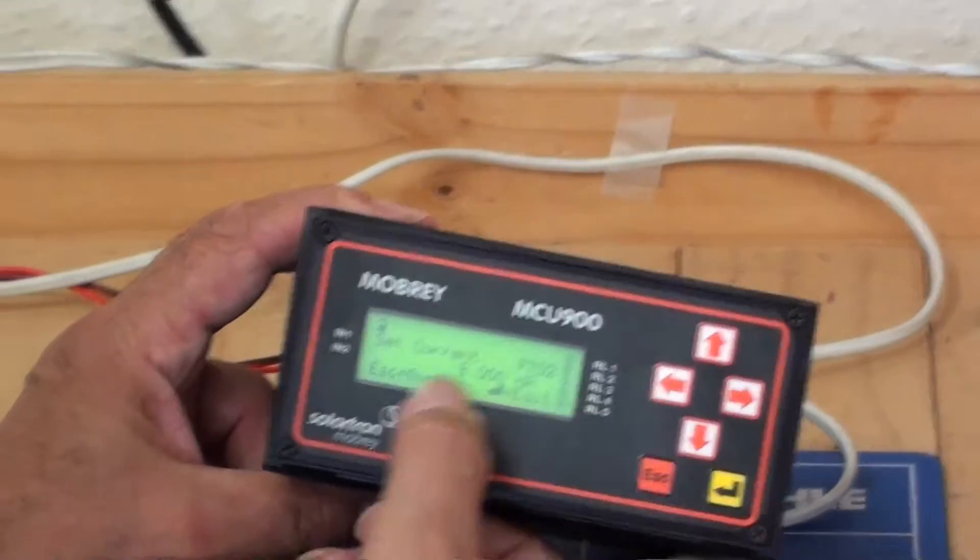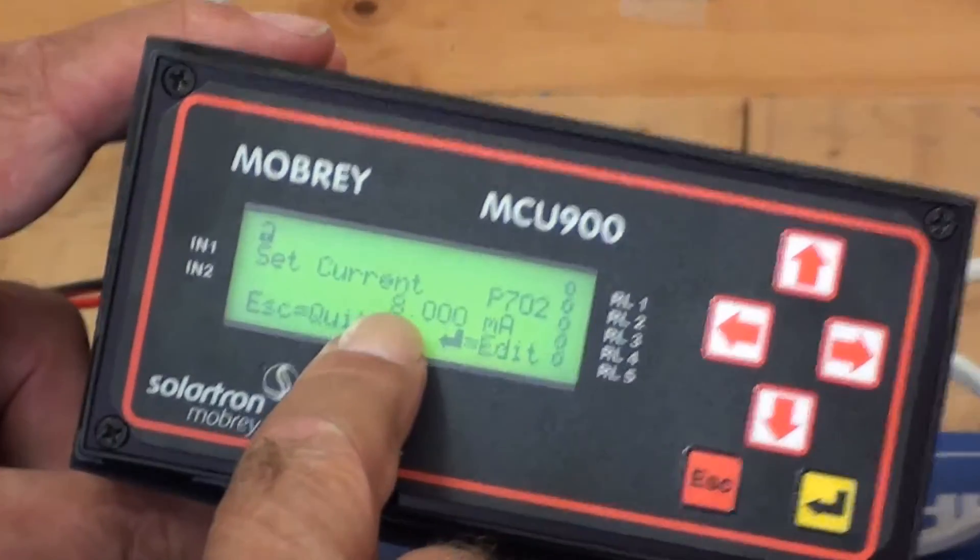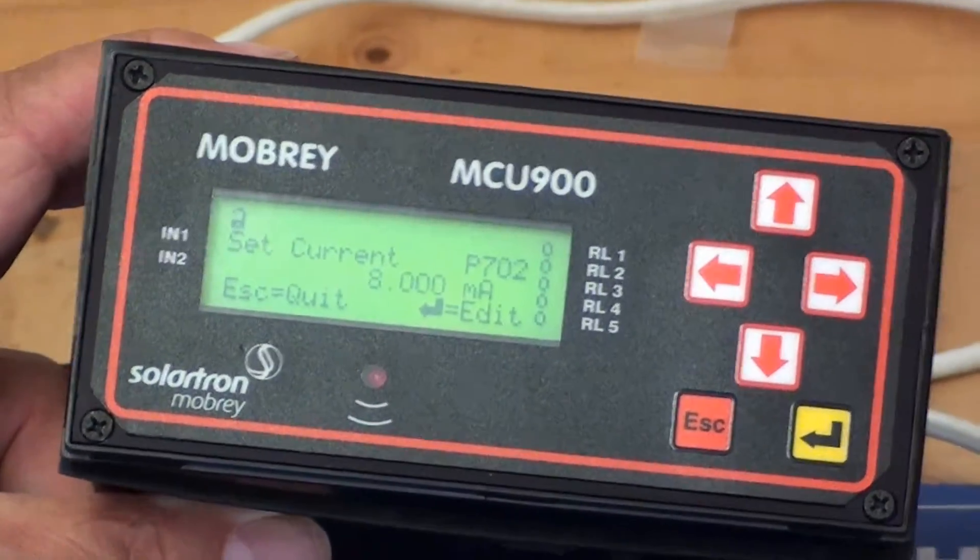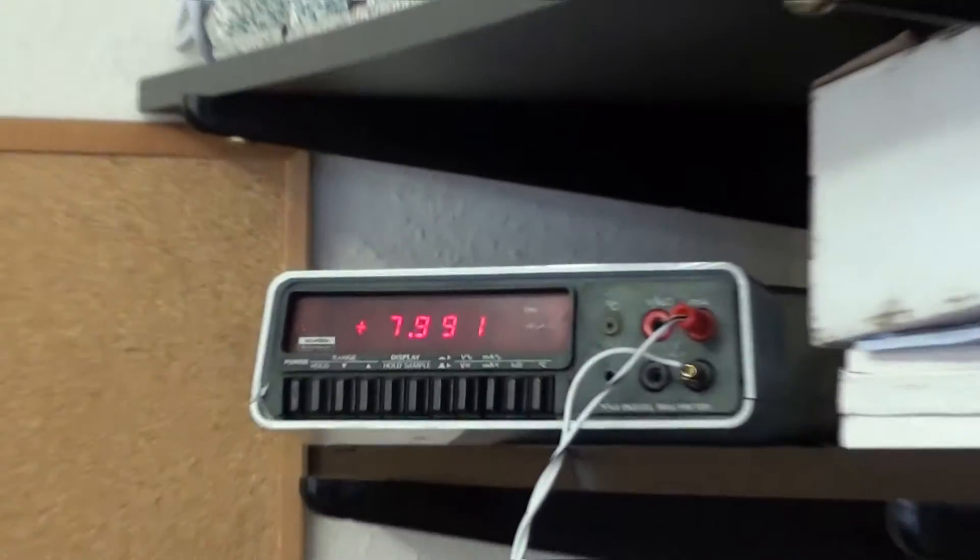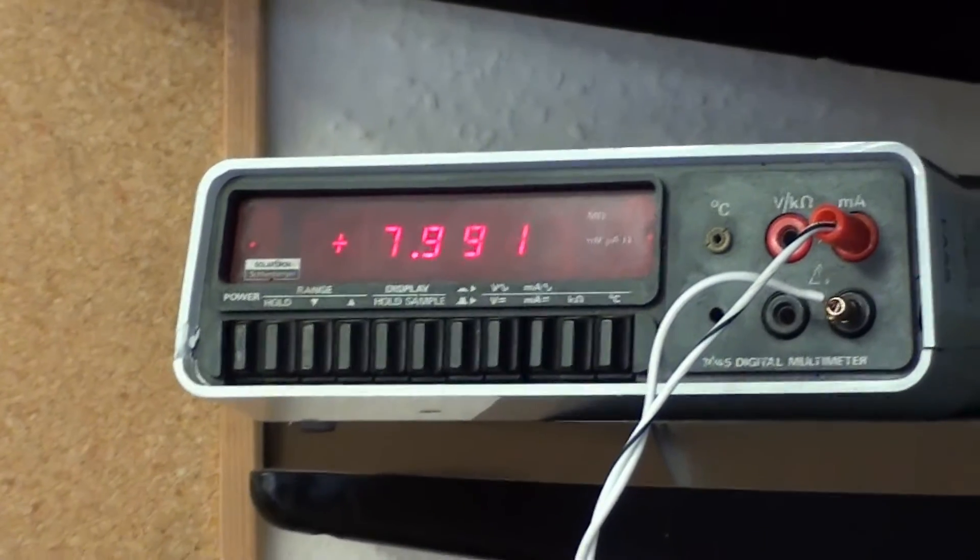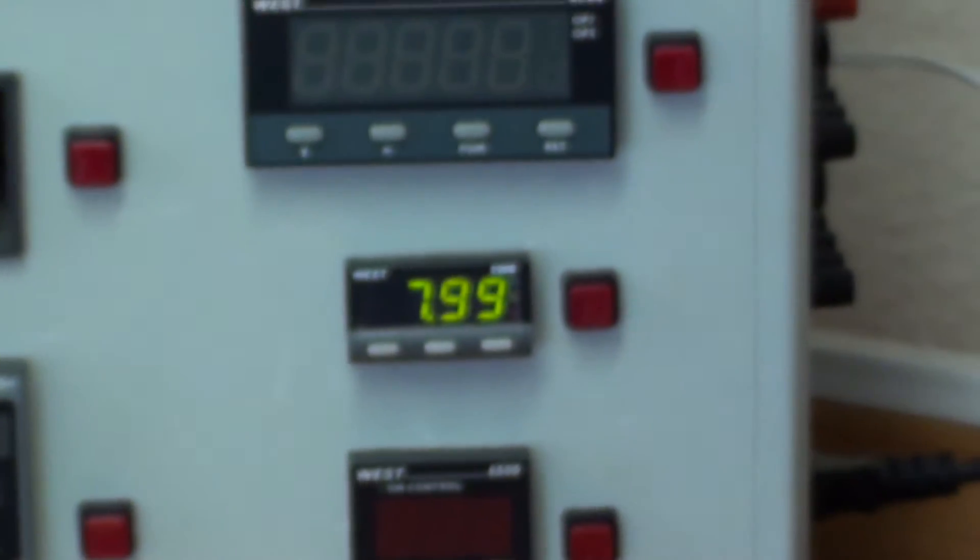If I go in here, we can see the current at the moment is 8mA, and if we look at the multimeter, 7.991, almost 8mA, and also on the display unit over here, 8mA.